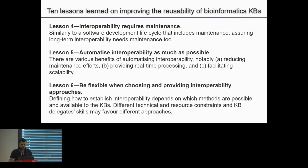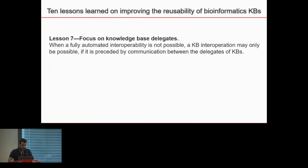The sixth lesson is to be flexible when choosing and providing an interoperability approach — not only for delegates, but for users of your resource who don't necessarily have the same expertise. Providing different ways to access, use, and analyze data is important, because people may prefer different programming languages like R, or query languages like SPARQL or GraphQL. The more options you have, the more users and knowledge bases you can reach. The seventh lesson focuses on knowledge base delegates, especially in two-sided interoperability: there is no magic solution or best technology that will solve an interoperability problem if the delegates don't want to participate. Having a good working relationship with delegates is really important.